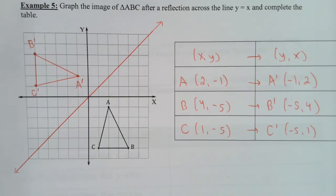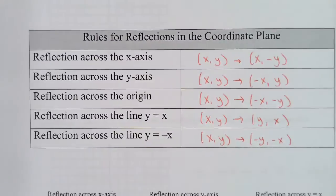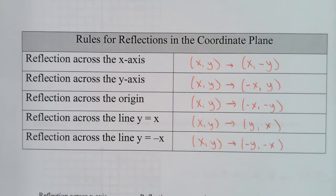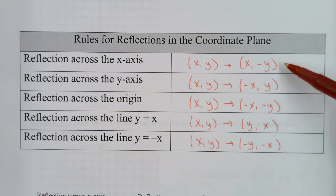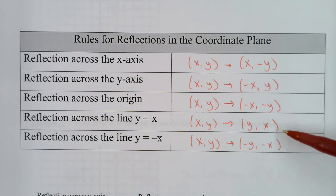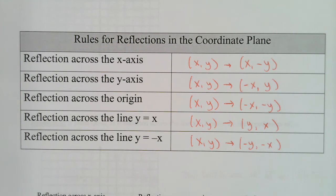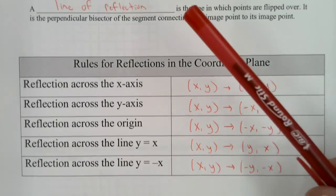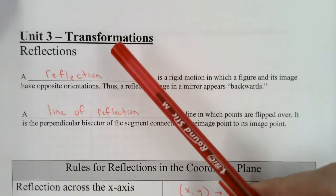The key is knowing these five rules of reflections. We focused mainly on the first, second, and fourth ones in this lesson — those are the three we'll use the most — but you may encounter the other two as well. That is the end of the lesson. This was the second type of transformation: reflections.